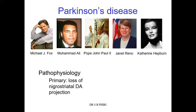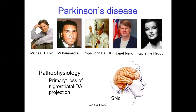If these neurons are facilitating the direct pathway, that results in increased movement. If they are inhibiting the indirect pathway, they are also increasing movement. So destruction of those neurons results in Parkinson's disease. In the Parkinson's brain, the substantia nigra pars compacta is destroyed, and you no longer have these dopaminergic nigrostriatal neurons projecting to the striatum.